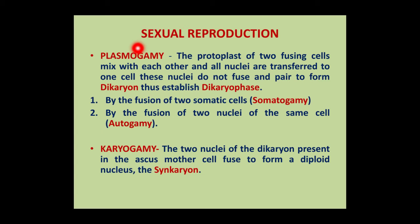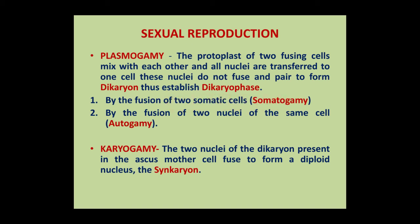In plasmogamy, nuclei pair to form a dikaryon by two methods: somatogamy, meaning fusion of two somatic cells, and autogamy, meaning pairing of two nuclei of the same cell.